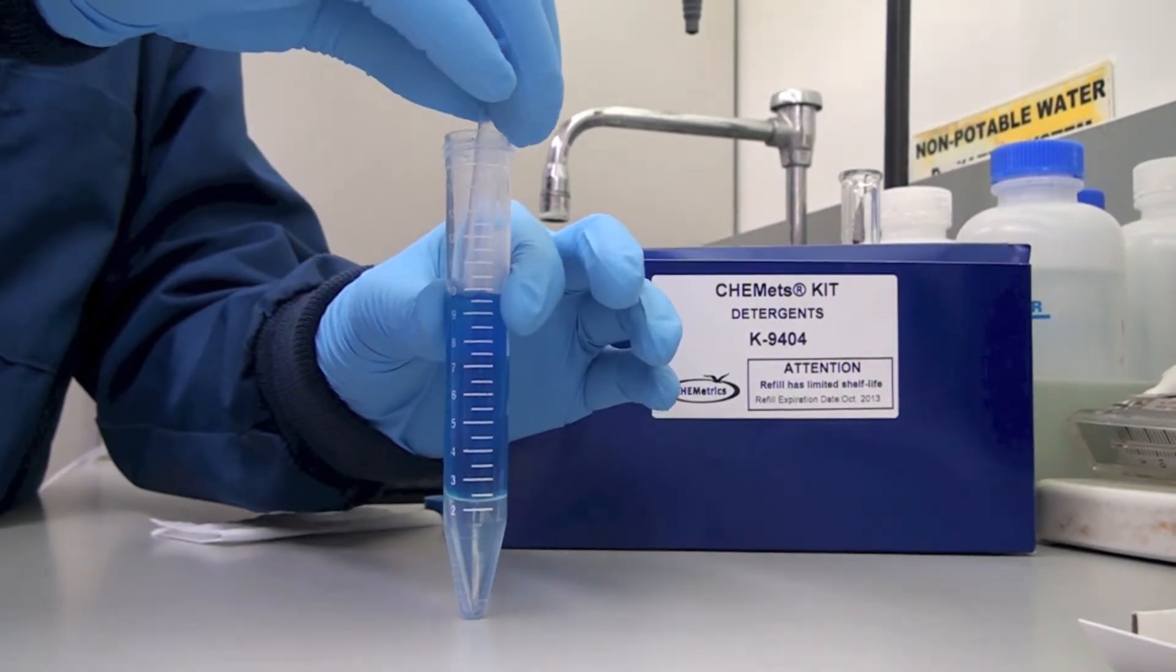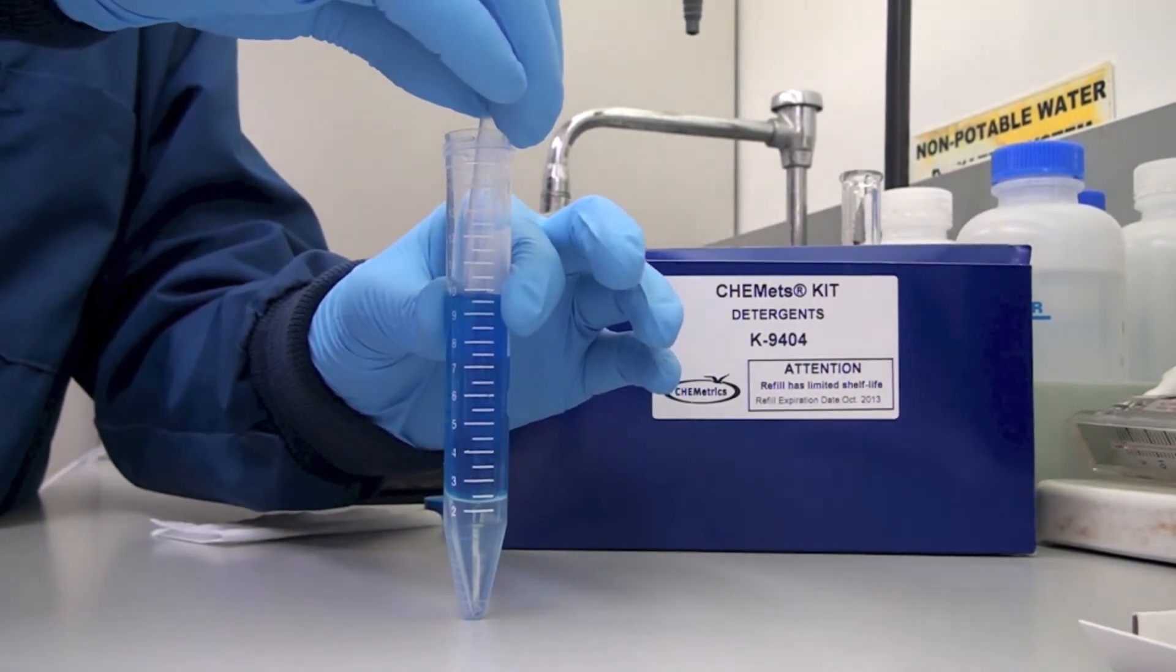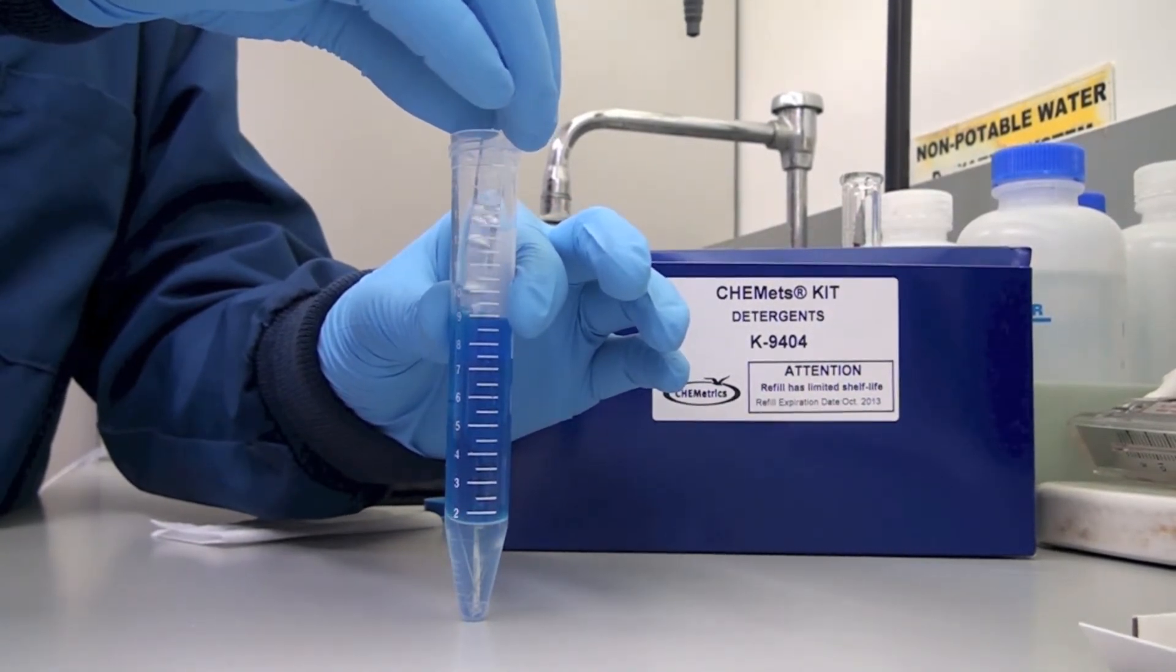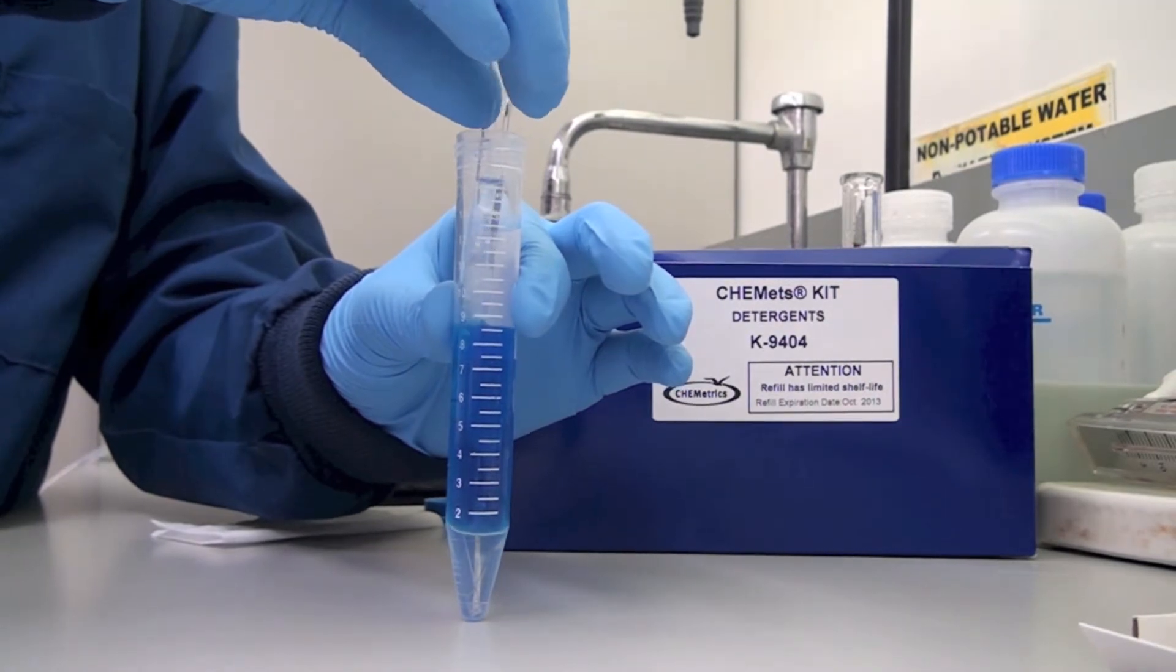Break the tip of the Chemet ampule by gently pressing it against the side of the reaction tube. The ampule should draw in fluid only from the organic phase or bottom layer.